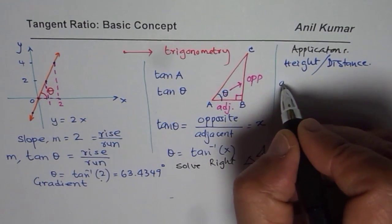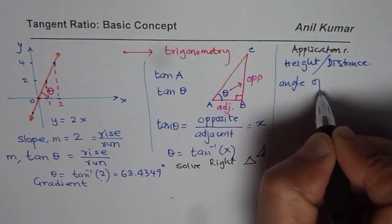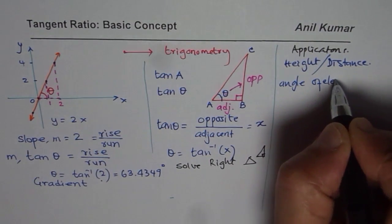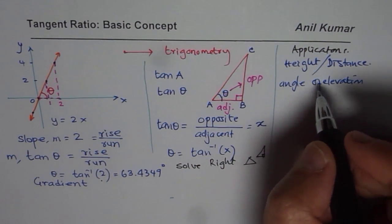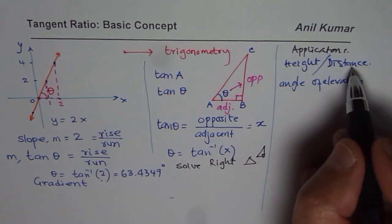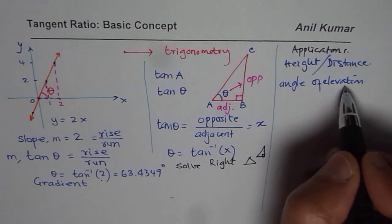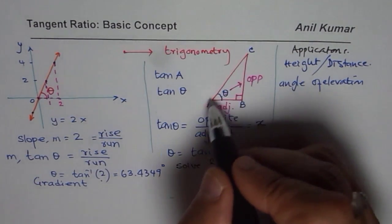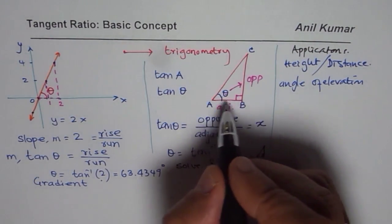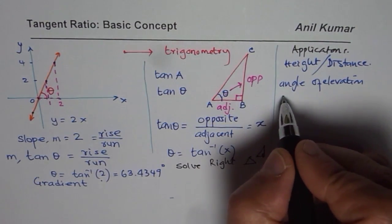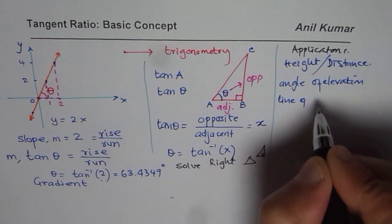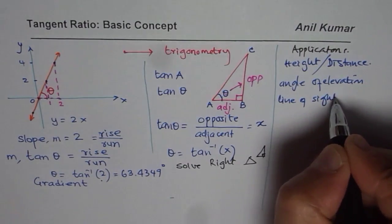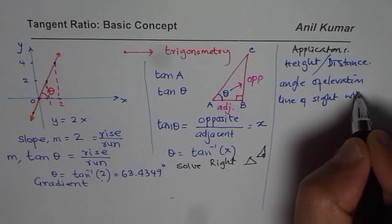And in such cases, this angle is called angle of elevation. So we will have application questions, where we are talking about height and distance, and angle of elevation. This angle of elevation is the angle made with the horizontal. So angle of elevation is always of line of sight, with horizontal.